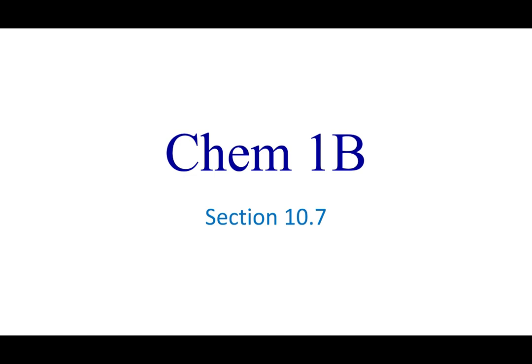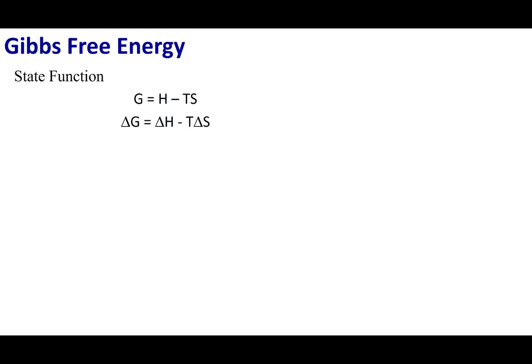Welcome to section 10.7. In this lecture we're going to discuss Gibbs free energy. Gibbs free energy was defined by a committee of scientists. They said that Gibbs free energy, G, is going to be defined by the enthalpy minus T, our temperature, times S, our entropy. This is by definition. You're going to see why they chose what they chose and how Gibbs free energy helps us to determine spontaneity.